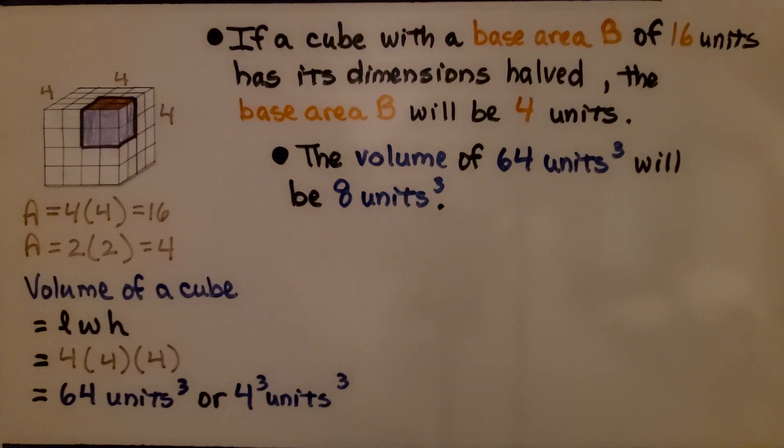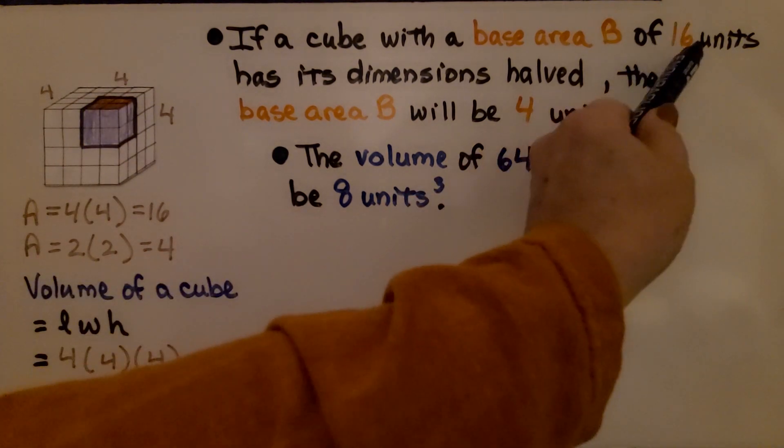That may have seemed confusing—we cut the measures in half, and it became one-eighth the size. Take a look at this cube. We have a little cube that's the corner of this larger cube. The little cube is 2 cube units across, 2 back, and 2 tall. The base area of the larger one is 4 × 4 = 16 units.